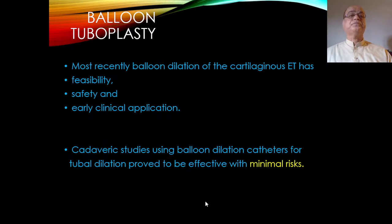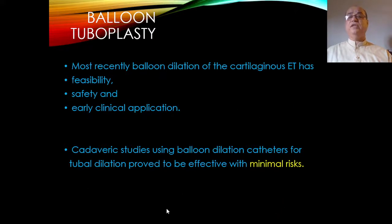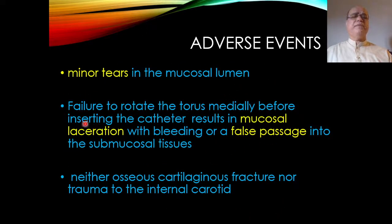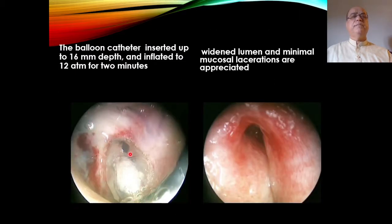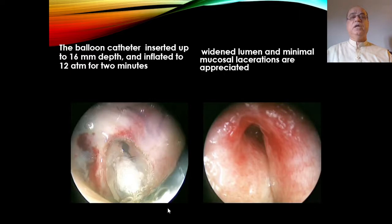Balloon tuboplasty: most recently, balloon dilatation of the cartilaginous Eustachian tube has shown feasibility, safety, and early clinical application. Cadaveric studies using balloon dilatation catheters proved effective with minimal risks — minor tears in the mucosal lumen can occur, but no osseous or cartilaginous fracture nor trauma to the internal carotid artery. A guide catheter is inserted into the tubal lumen, the balloon catheter inserted to 16 mm depth, inflated to 12 atmospheric pressure for 2 minutes, resulting in a widened lumen with minimal mucosal lacerations.